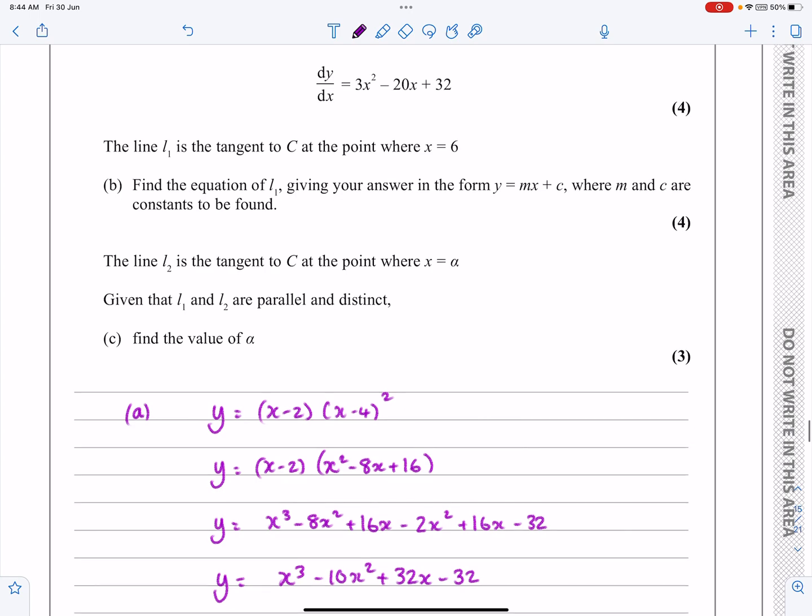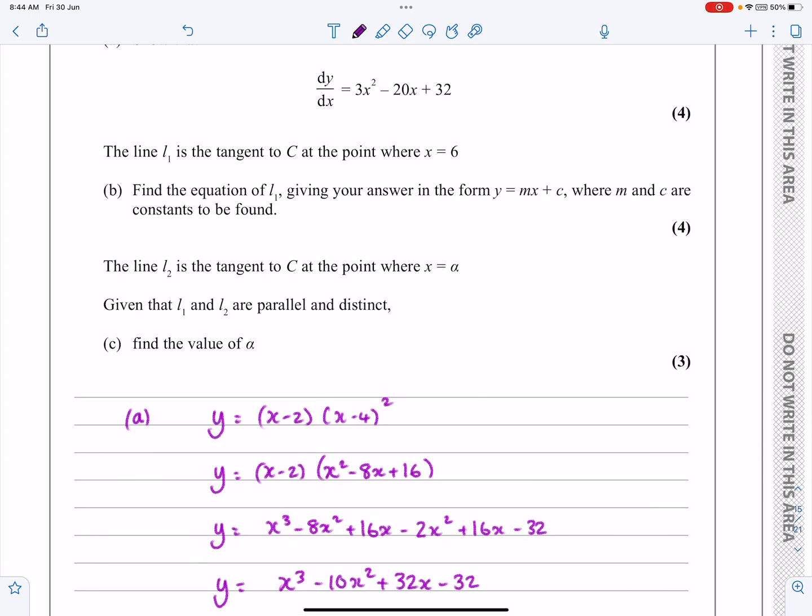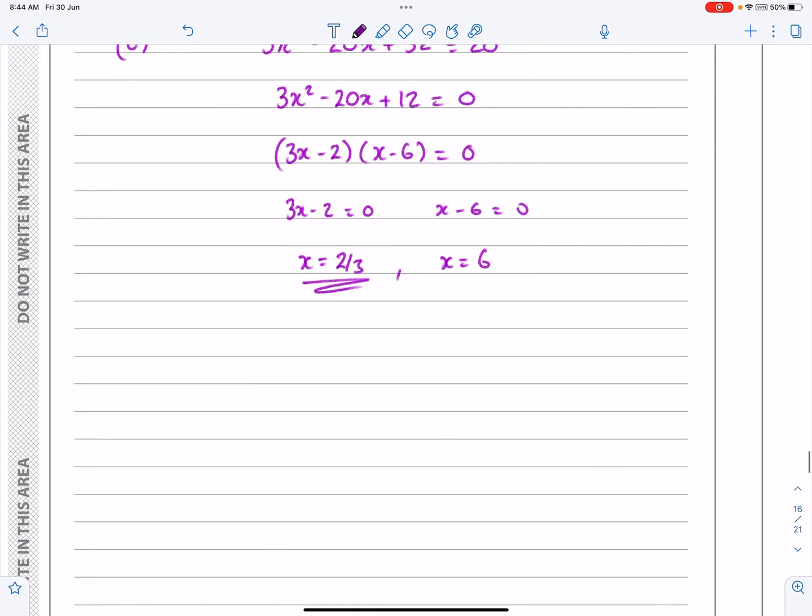Let's just go back and see what did they actually want. They just want the value of alpha. The value of alpha is x equals alpha, so alpha is equal to 2/3. Probably finish off actually by saying alpha equals 2/3 to make it really clear that I understood what I've done there.